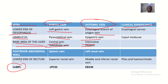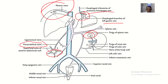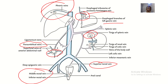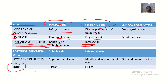The lower end of rectum is the simplest site: the superior rectal vein is the portal contribution, while the middle rectal and inferior rectal veins are the systemic contributions.